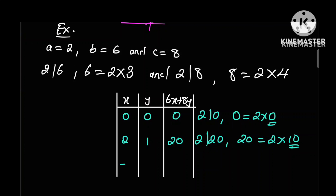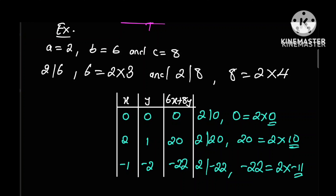If you take x to be negative 1 and y to be negative 2, then 6x plus 8y will be equal to negative 22, and again 2 divides negative 22 since negative 22 can be expressed as 2 times negative 11, where negative 11 is also an integer. So we can see that for each value of x and y that we choose, 2 will always divide 6x plus 8y. Now let's prove that this statement is actually true for all integral values of x and y.